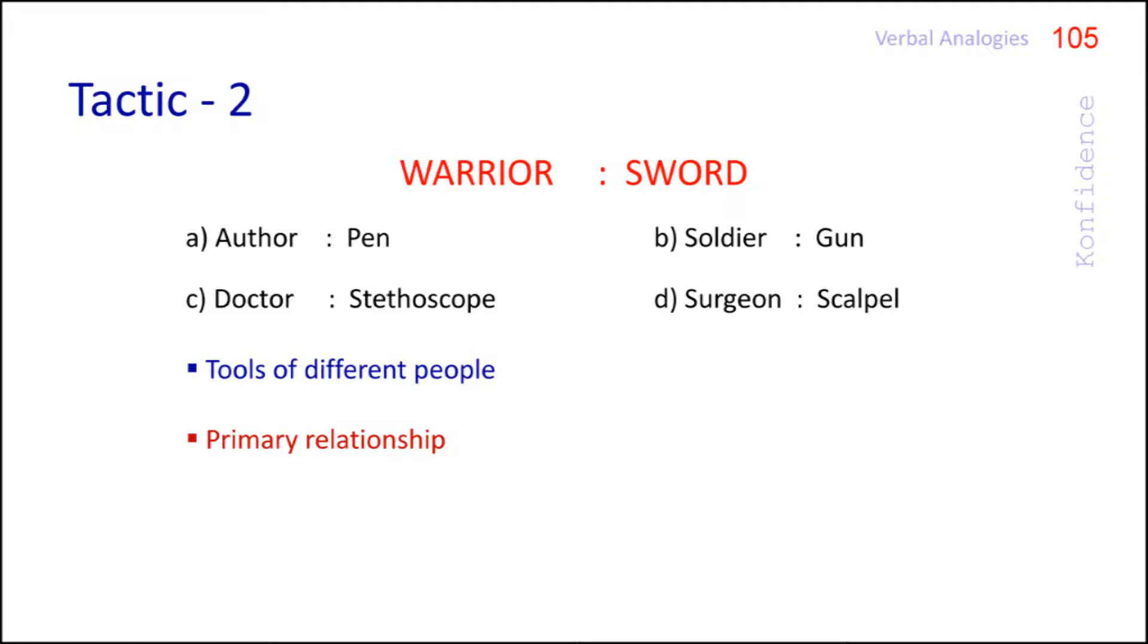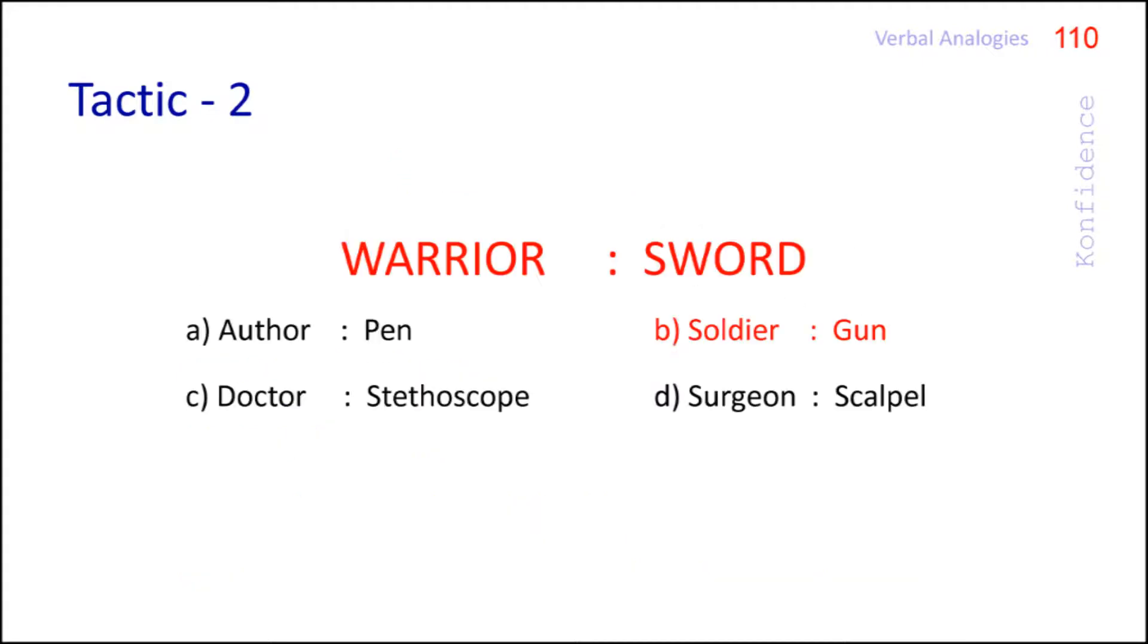So we should go beyond it and search for a secondary relationship. When we look closer, we can understand that sword and gun are not mere tools but weapons and both are used in fights and battles. They are used for violent action. But in other options, the tools mentioned are used for only peaceful or non-violent actions. Hence, the right answer is option B.